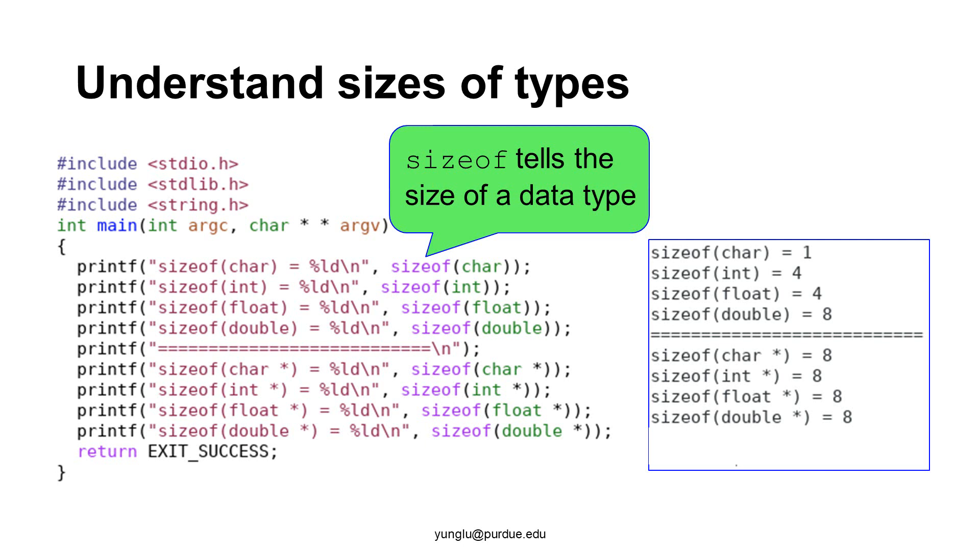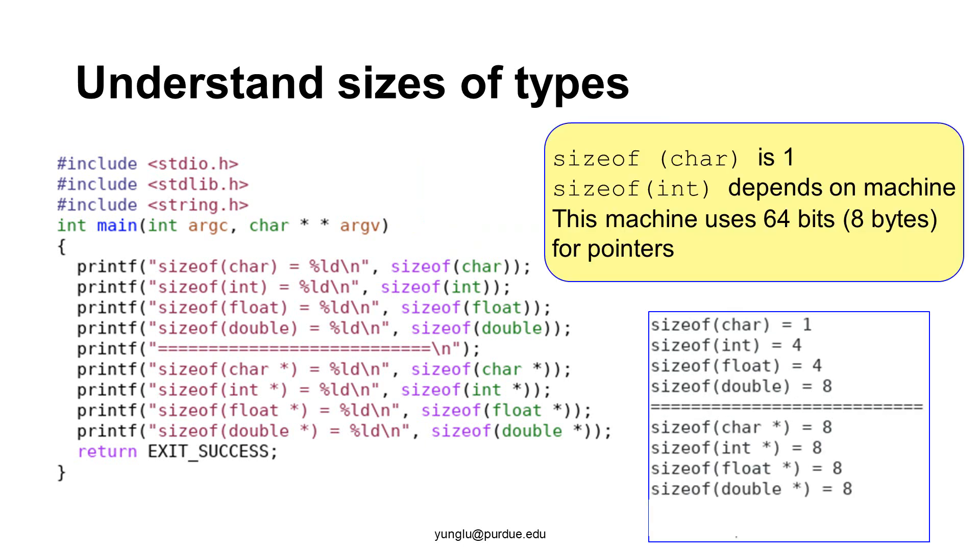The second part of the program reports the sizes of pointers of char, int, float, and double. All of them are 8. The size of char is 1. However, the size of int may depend on machines. On this particular machine, the size of int is 4 bytes. The size of a pointer also depends on machines. On this machine, the size of a pointer is 8 bytes, that is, 64 bits. If your laptop or desktop was bought in the past few years, it is likely to have 64 bits as the size of pointers. You need to be aware that some machines may have fewer or more bits for the size of pointers.